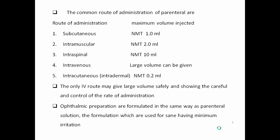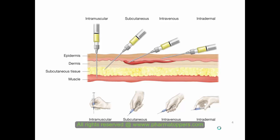Intradermal, also called intracutaneous, the dose should not be more than 0.2 ml. Only the IV route may give large volumes because it allows safe and careful control of the rate of administration. Ophthalmic preparations are formulated in the same way as parenteral solutions, with formulations designed for minimum irritation.